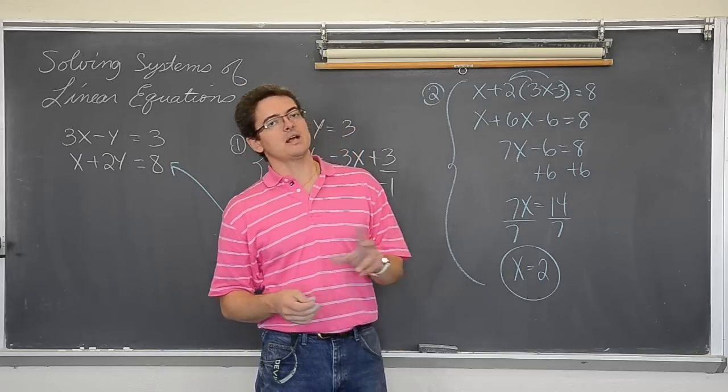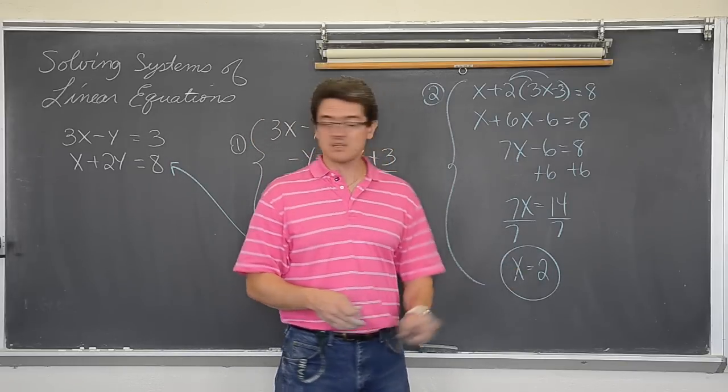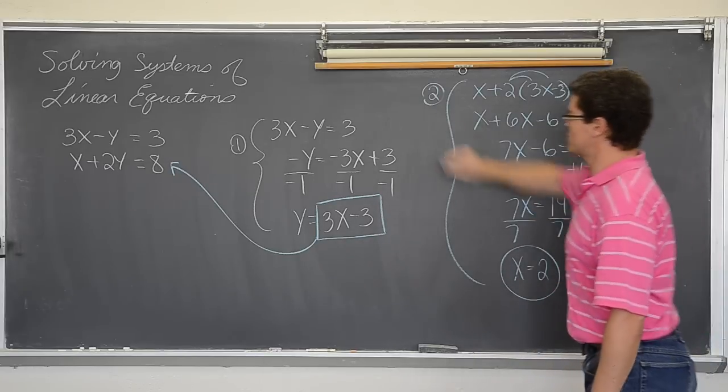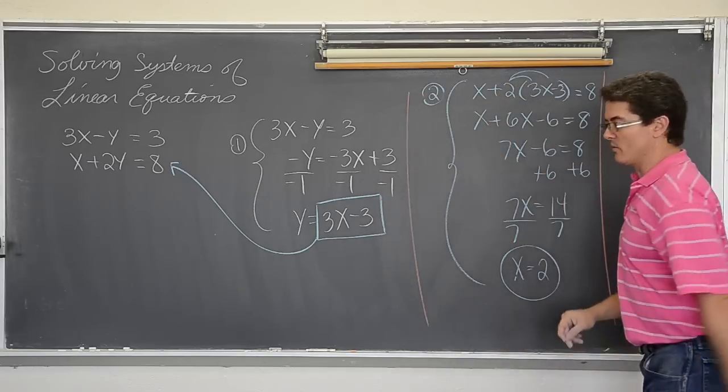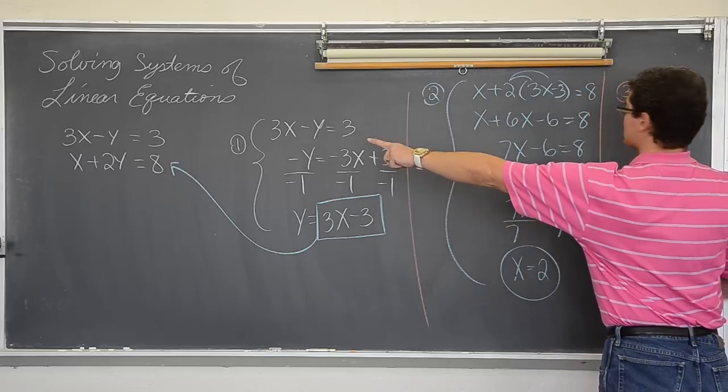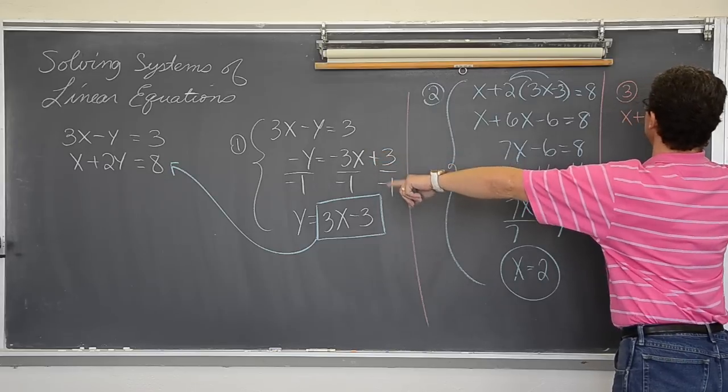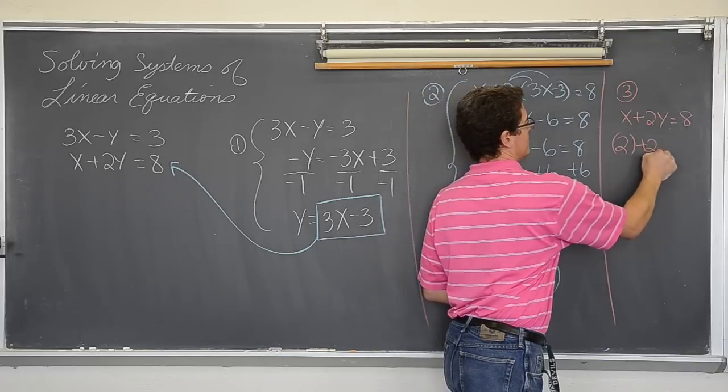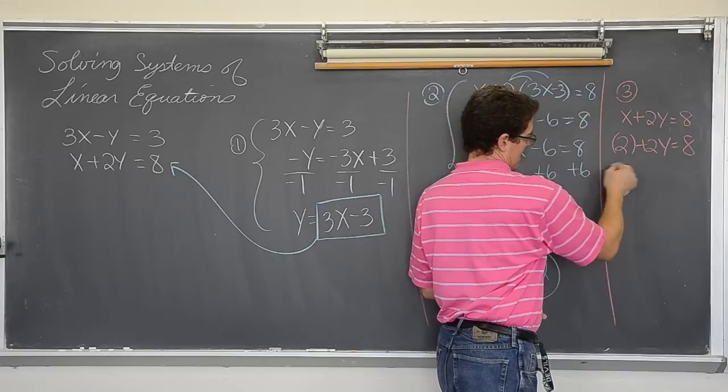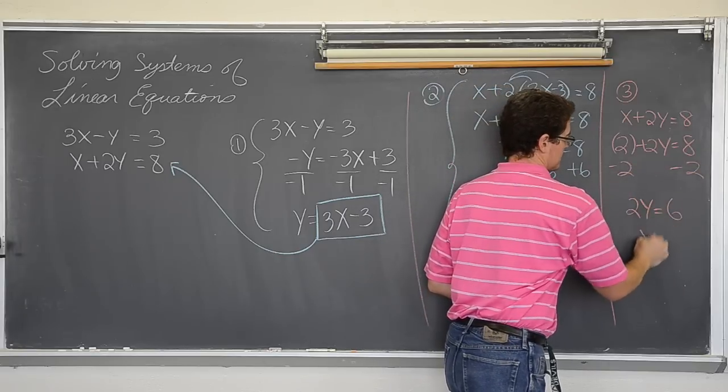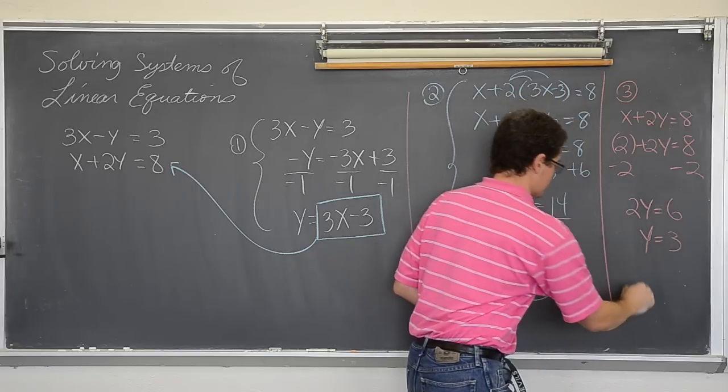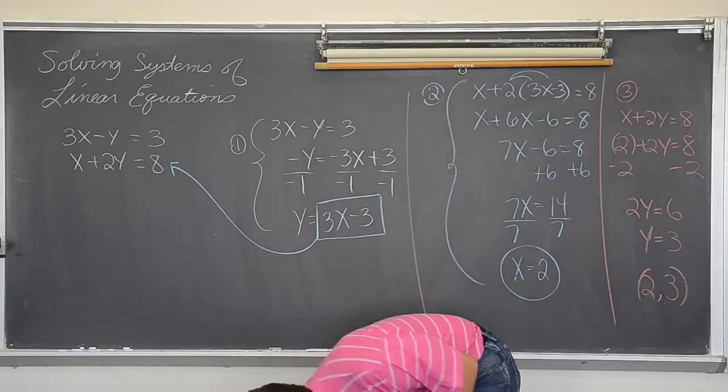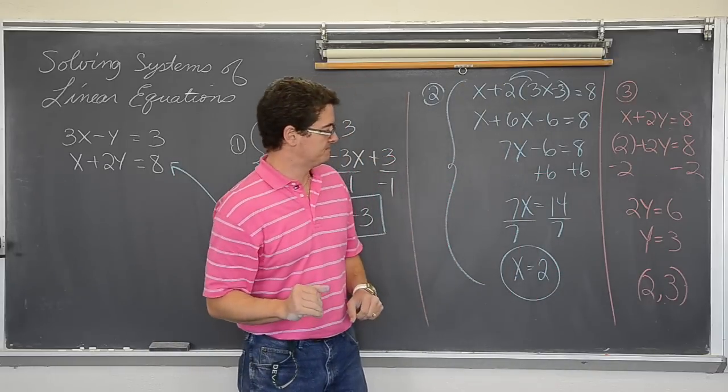Well then how do you find the y? Because an intersection point is an x and a y value. Well it is easy. Take this answer and plug it back into one of your original problems. I am going to pick the one with all positive numbers. x plus 2y equals 8. I am going to plug in 2 for x. So 2 plus 2y equals 8. I am going to subtract both sides by 2 and get 2y equals 6. Divide by 2 and I get y equals 3. So these two lines cross at the point of 2, 3. And if you saw a picture, that is where those two lines would be crossing.